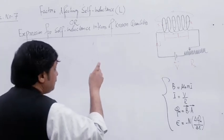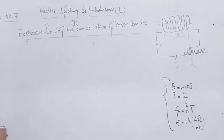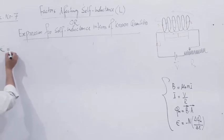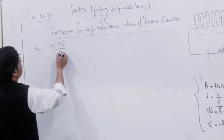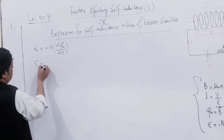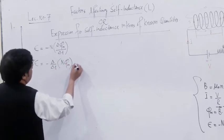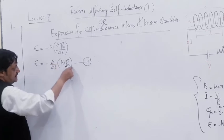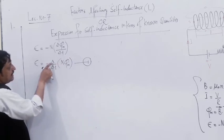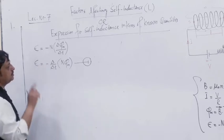So whenever the current changes in this circuit, induced EMF is produced according to Faraday's law. The induced EMF is equal to minus N times delta phi-M divided by delta T. This can be written as minus del/delta-T of N·phi-M. This quantity N·phi-M is called flux linkage. Whenever the flux linking with the coil is changing with the passage of time, we get induced EMF according to Faraday's law. The negative sign is due to Lenz's law.